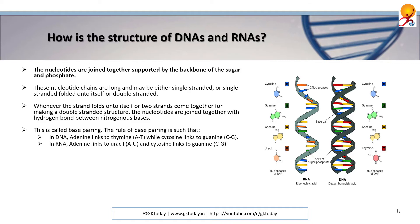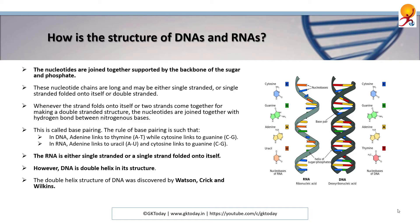The rule is: in DNA, adenine links to thymine while cytosine links to guanine, and in RNA, adenine links to uracil and cytosine links to guanine. So cytosine always links to guanine. RNA is either single-stranded or a single strand folded onto itself. However, DNA has a double helix structure. The double helix structure of DNA was discovered by Watson, Crick, and Wilkins.